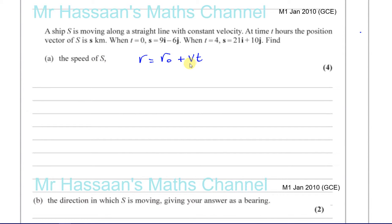In this case, we need to find the speed of S, so we first need to find its velocity. What they gave us is its position when time is zero, which is 9i minus 6j. They've also given us its position when time is four, which is 21i plus 10j, and they've also given us the time: four hours.